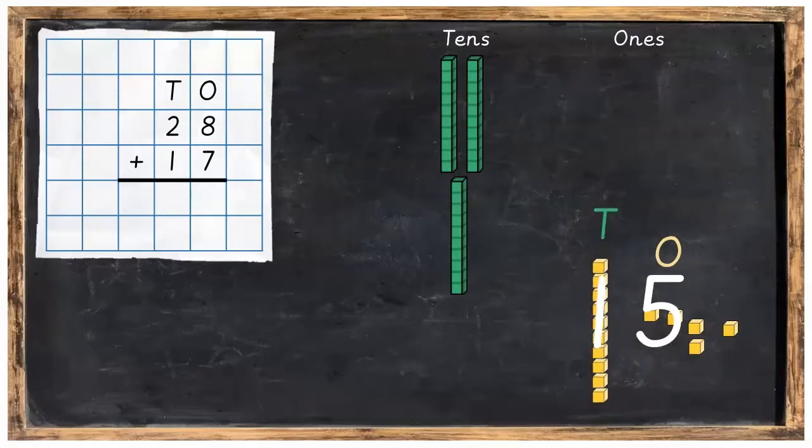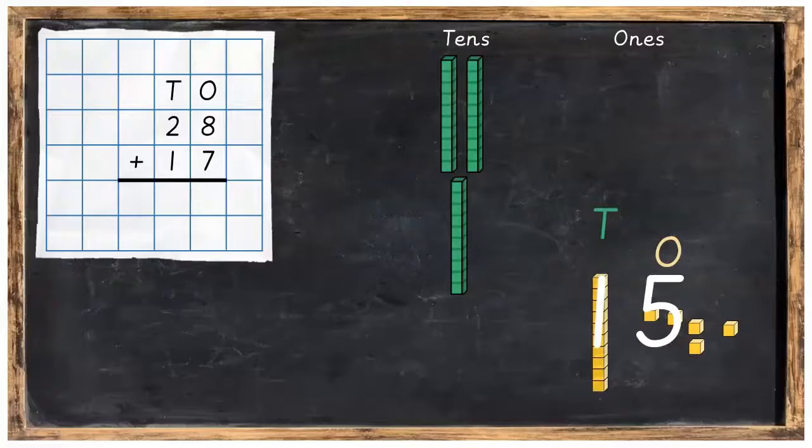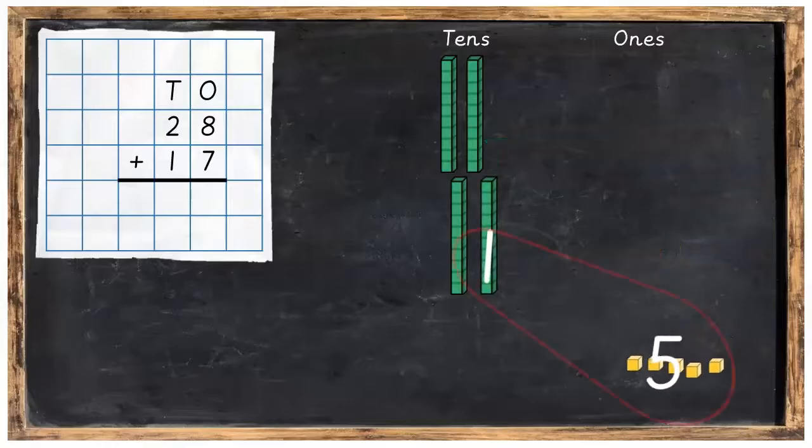Now there's two things we can do. We can either bring that one 10 over to the tens column where it belongs, or we can swap it out for a green 10 and then bring it over to the tens column. And that's what we're going to do. So we put down our 5 and bring over our 1.